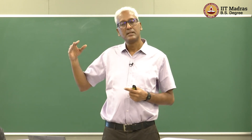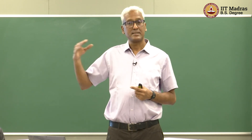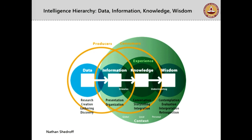In any kind of information design or data visualization process, we move through this hierarchy of intelligence, starting with data being the smallest or the rawest unit. Essentially, data is just a bunch of information which is not organized in any manner — it does not have any meaning and does not reveal any insights yet.